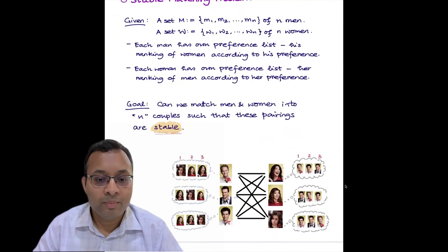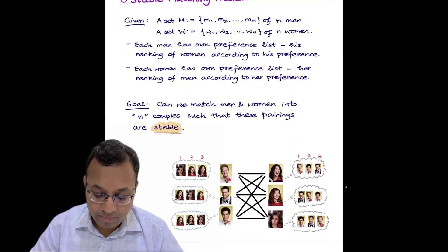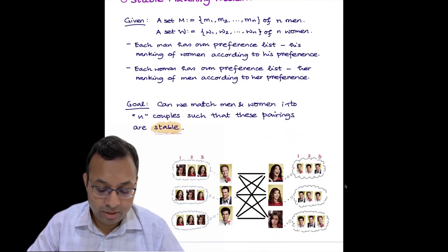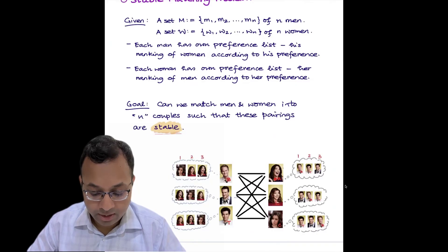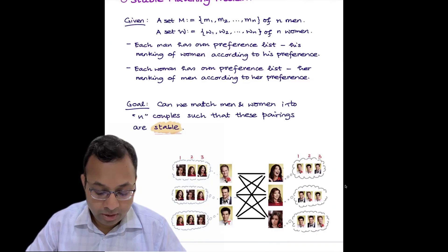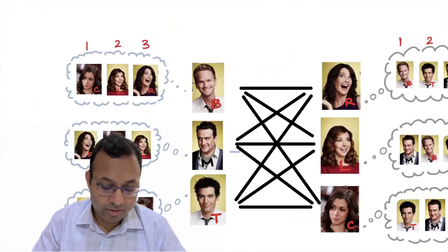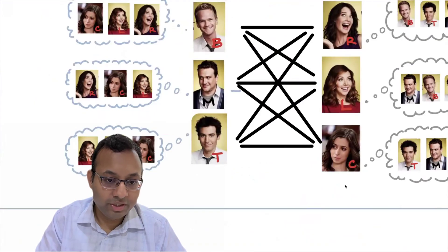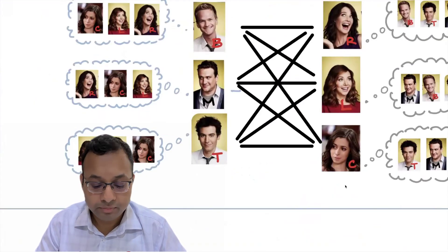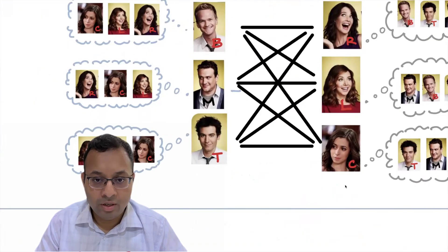We'll define what is stable, but let's start with an example. There are three men: Bernie, Marshall, and Ted — B, M, T. And three women: Robin R, Lily L, and Christian C. Each one has their own preferences. Bernie's first preference is Christian, second is Lily, third is Robin. Marshall's first preference is Robin, second is Christian, third is Lily, and so on. We need to find a matching of three couples which is stable — where none of the pairs would like to break it and elope with someone else.